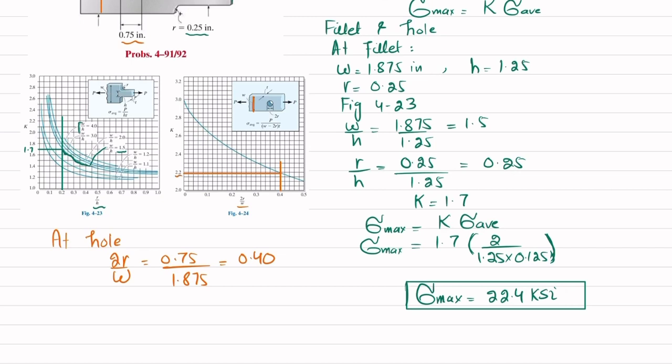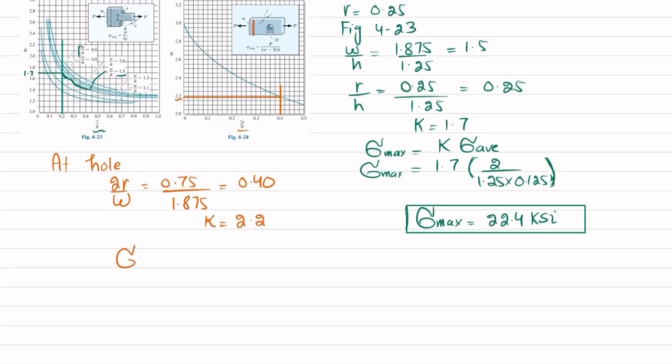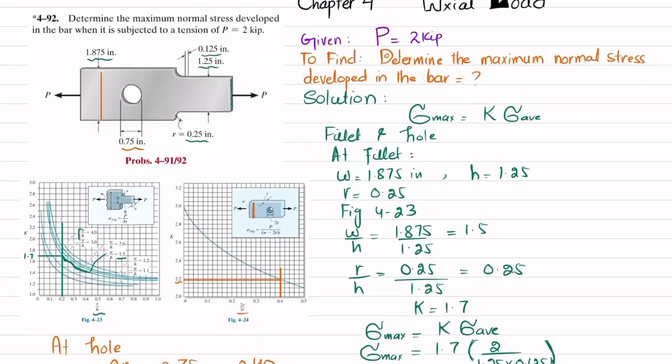At the point of intersection, draw a horizontal line. You will get the value of K, which is 2.2. Now we will find the maximum stress for this hole. That is equal to K into sigma average. K is 2.2, and sigma average is load divided by area. The load is 2 kips divided by area.